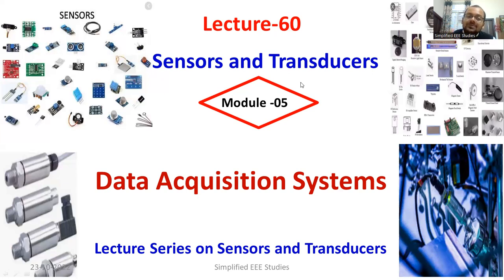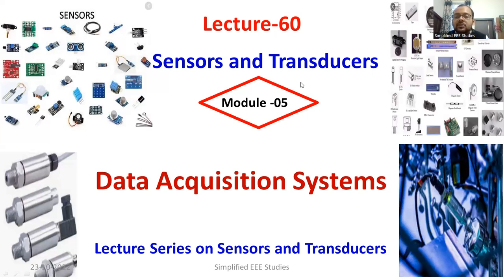The output of the signal conditioning device — whatever output we obtain — is the amplified or attenuated signal, and that has to be converted into different forms. For example, if the requirement of the system is digital but the available input is analog, then the analog data will be converted into digital data. In some cases the data needs to be stored using any kind of memory, or you have to take a printout of the information. For that purpose, we require one device called a data acquisition system.